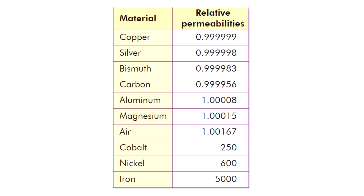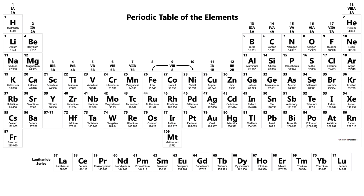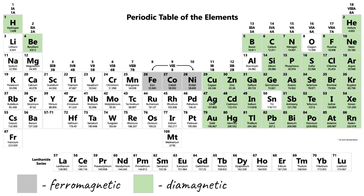Relative permeability values for some materials are listed in a table. Copper, silver, bismuth, and carbon are diamagnetic because their relative permeability is less than one. Aluminium, magnesium, and air are paramagnetic because their relative permeability is a bit more than one. Cobalt, nickel, and iron are ferromagnetic with relative permeability much bigger than one. Looking at the periodic table, three elements — iron, cobalt, and nickel — have ferromagnetic properties, while elements marked in green have diamagnetic properties, and all other elements are paramagnetic.